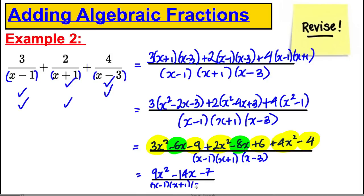All of that would be over x subtract one, x plus one and x subtract three. We should check if the top can be factorised. It turns out the top can't be factorised. And therefore, that is as simple as this answer can be in example two.